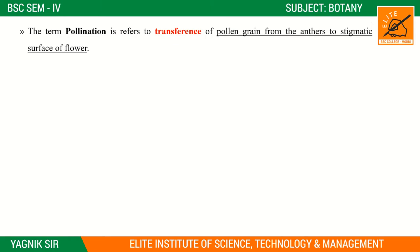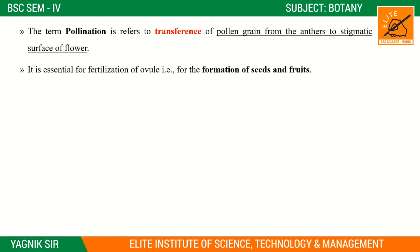The term pollination refers to the transference of pollen grains from the anther to the stigmatic surface of the flower. Pollen grains are transferred from the anther to the stigma.